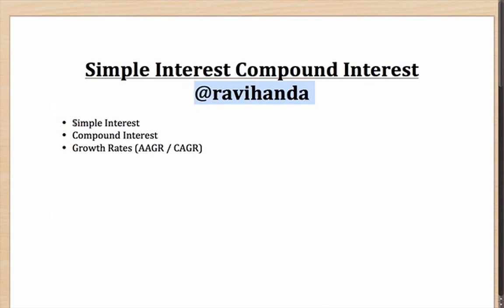In today's session we are primarily going to talk about Simple Interest, Compound Interest, and Growth Rates which are the AAGR and CAGR. AAGR stands for Average Annual Growth Rate whereas CAGR stands for Compounded Annual Growth Rate. Essentially they are just applications of Simple Interest and Compound Interest.